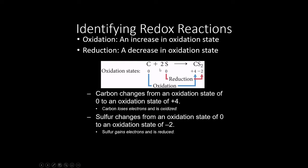For example, in this chemical reaction, carbon is reacting with sulfur to make carbon sulfide. The carbon goes from zero to plus four — that's an increase in the oxidation number, so that is an oxidation. The sulfur goes from zero to minus two, so that is a reduction. You will always, always have both occurring. You will never have two oxidations or two reductions — it is always one of each. It's the only possibility.